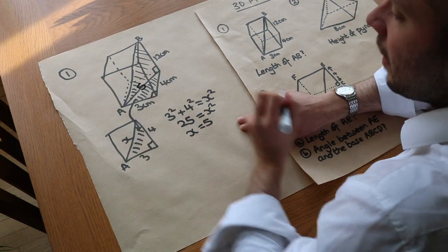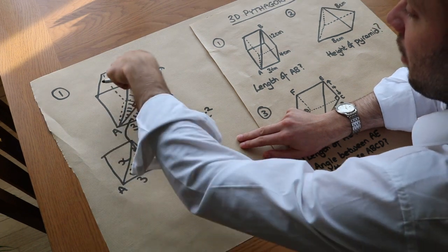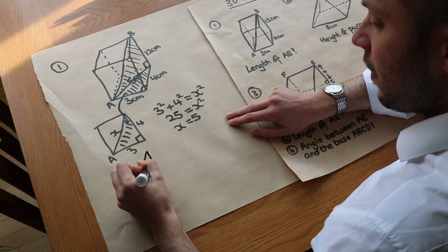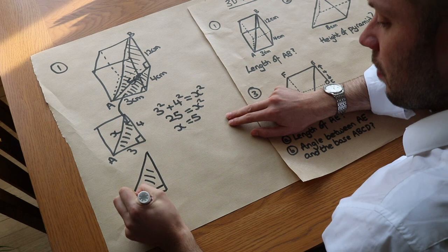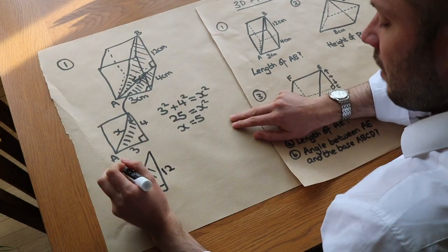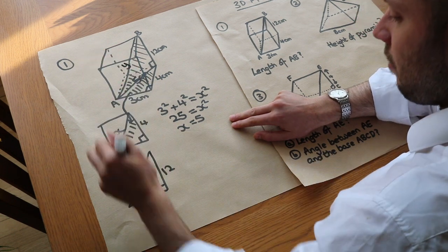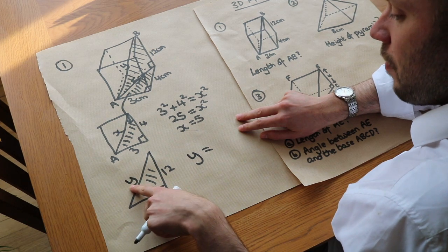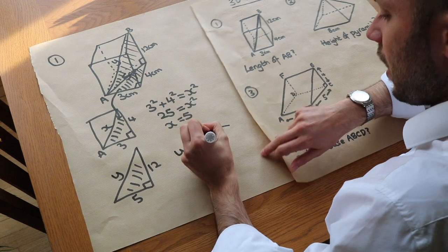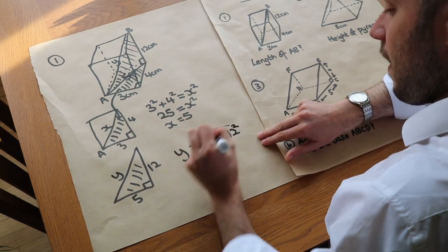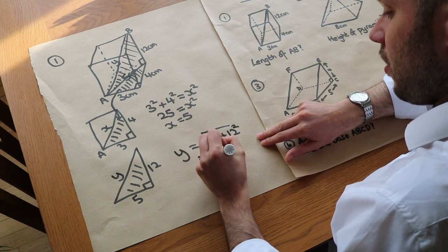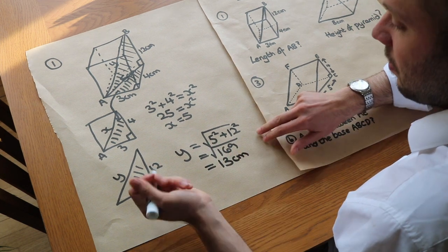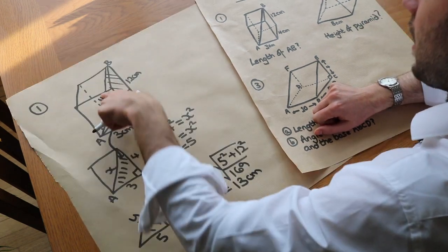Now we know this length is 5 centimeters. Looking back at our triangle, we have two sides: 5 and 12. Drawing this triangle separately, with 5 at the bottom and 12 going up, we apply Pythagoras to find y — the hypotenuse. Taking the square root of the sum of squares: √(25 + 144) = √169 = 13 centimeters. So length AB is 13 centimeters.